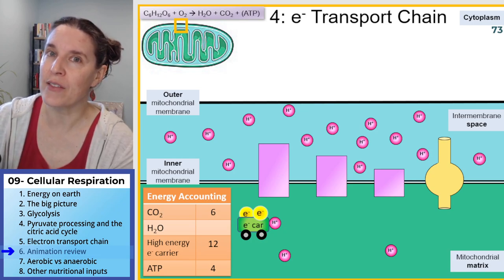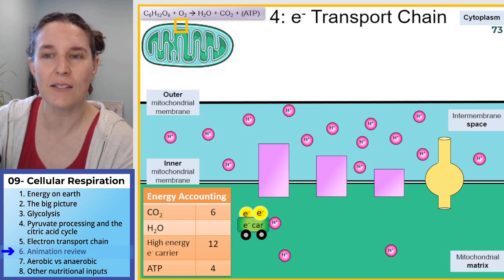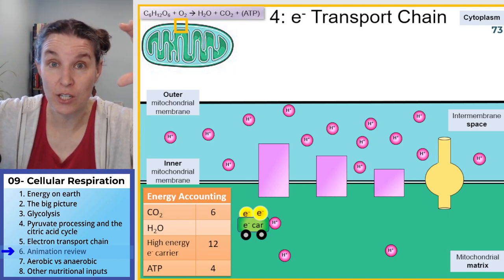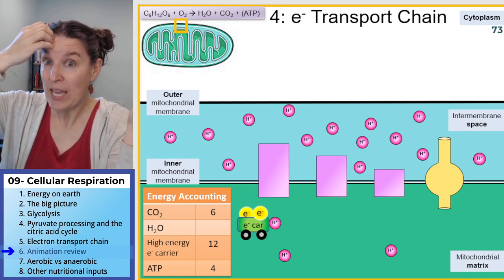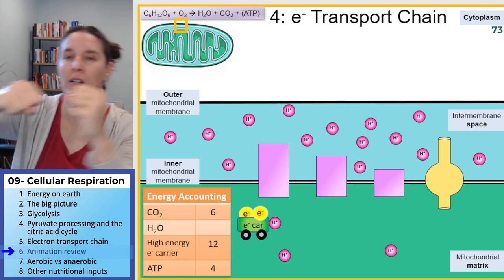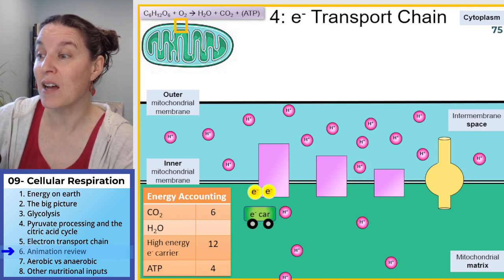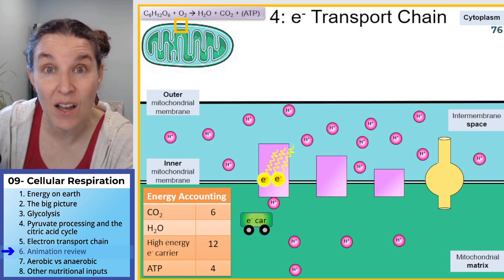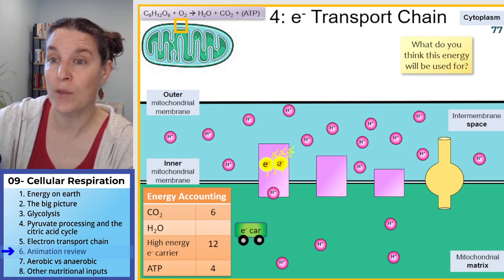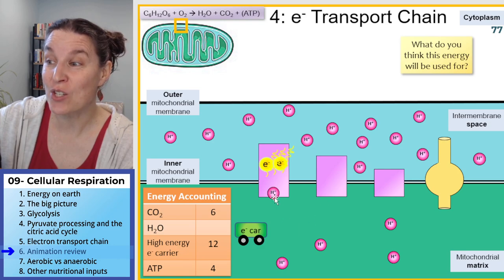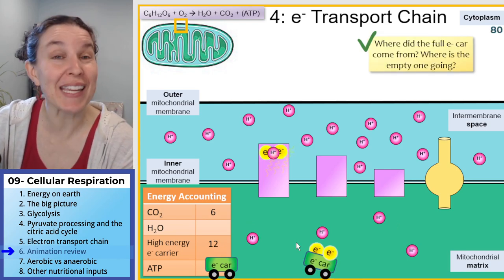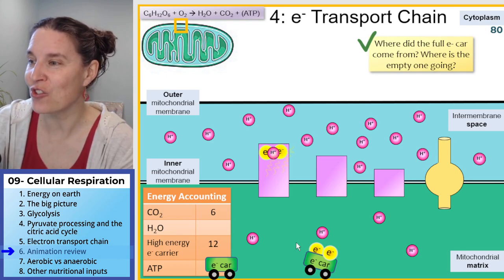The high-energy electrons — there they are. We now have a high concentration of protons in that intermembrane space. You can't pump more protons into that space unless you provide an energy source — high-energy electron carriers to the rescue. These carriers pass off their electrons, and as they do, energy is released. What will that energy be used for? Look — here's a proton being pumped by the protein against its concentration gradient into the intermembrane space.